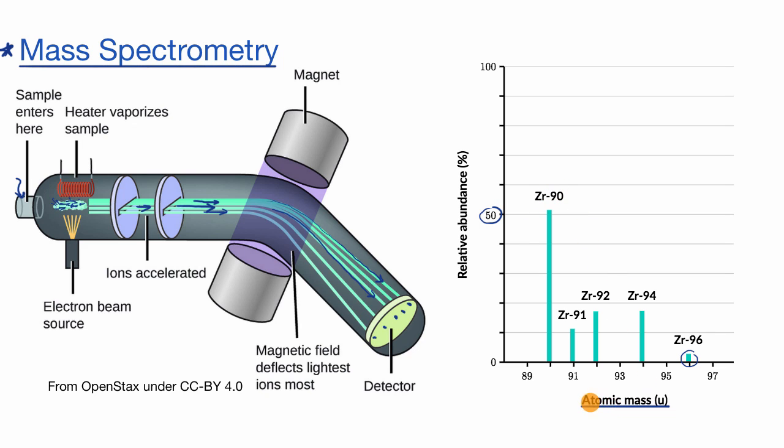Now, in other cases, you won't see it just in terms of atomic mass, given in unified atomic mass units. Sometimes in this horizontal axis, they'll give it in terms of mass to charge ratio, where mass is the mass, but then charge is essentially the charge of the ions.